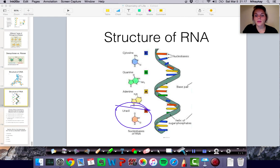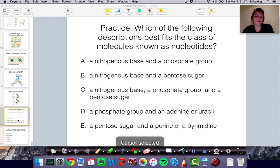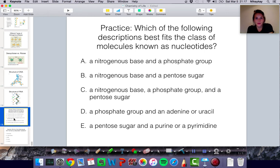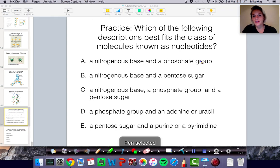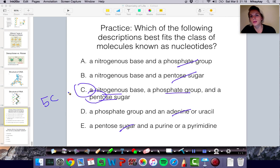All right, let's do some practice questions. So, first off, which of the following description best fits the class of molecules known as nucleotides? What are nucleotides made out of? Well, are they a nitrogenous base and a phosphate group? No, you're missing something. Are they a nitrogenous base and a pentose sugar? No, you're missing something. Are they a nitrogenous base, a phosphate group, and a pentose sugar? Yes, but we can go through the rest of these just for good measure. Phosphate group, adenine, or uracil? Nope. Missing the sugar. Pentose sugar, purine, or pyrimidine? Nope. Missing the phosphate. So we always need nitrogenous base, phosphate group, and a pentose sugar. Pentose just means five-carbon sugar because they all have five carbons on them.